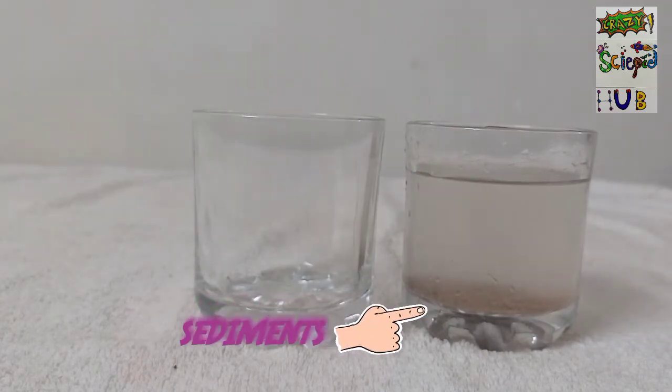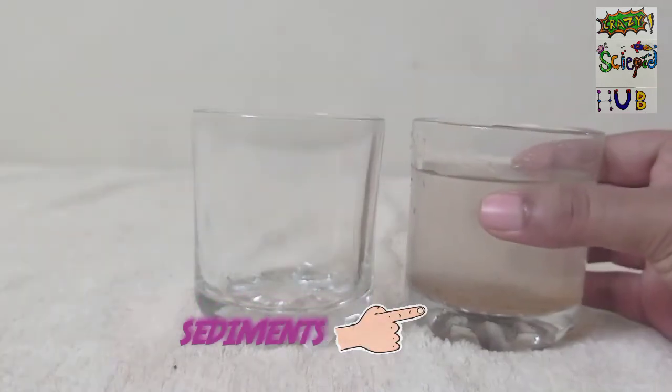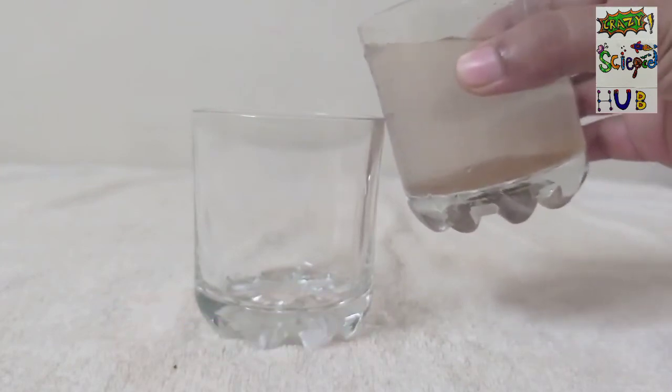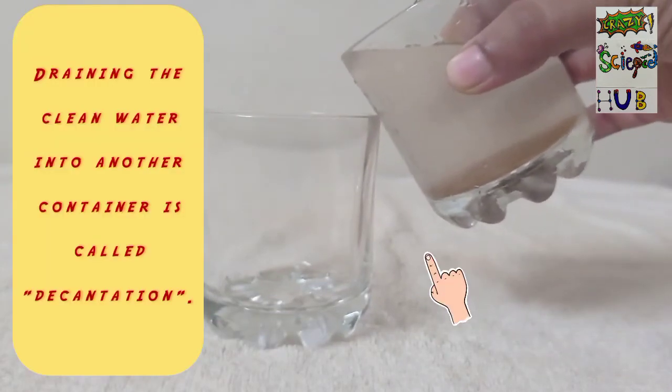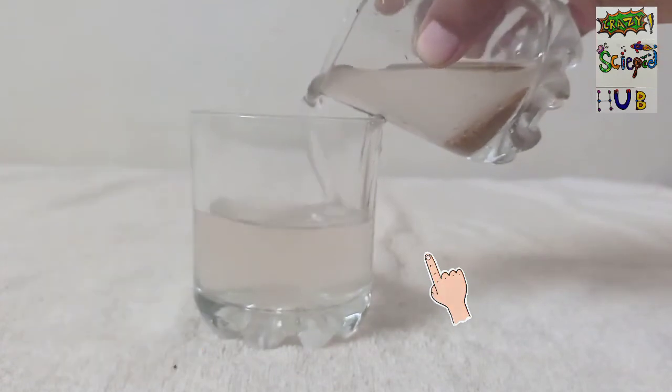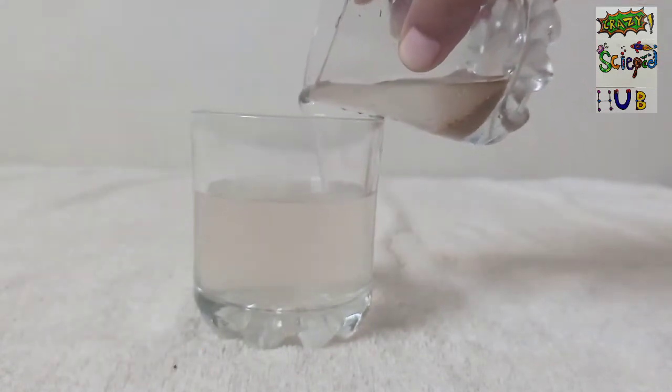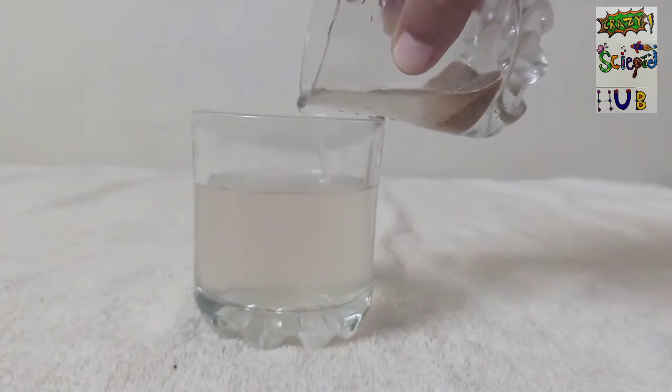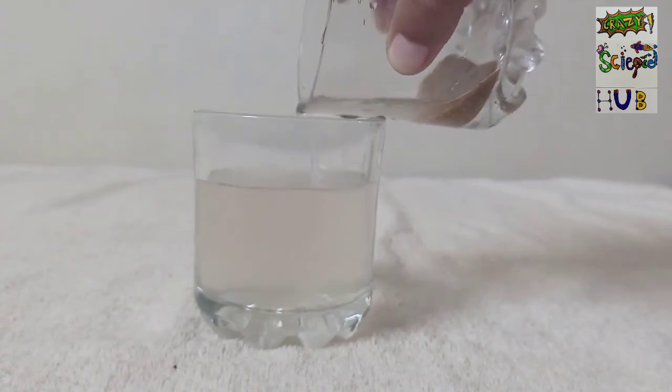Now we are going to pour this strained water into another container. This process is called decantation. Without disturbing the sediments, we have to pour the water slowly into the another beaker.